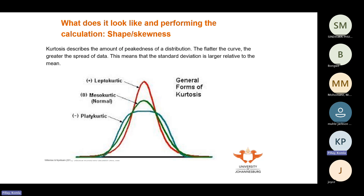You do not need to know leptokurtic, mesokurtic, or platykurtic for this module — we're just showing you what different distribution shapes look like. Kurtosis describes the amount of peakness in your distribution. The flatter the curve, the greater the spread of data and the larger the standard deviation relative to the mean. This won't be tested.